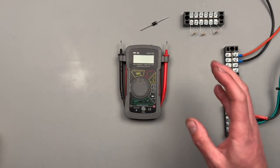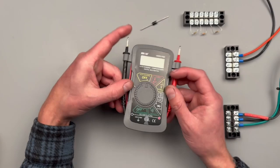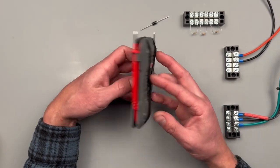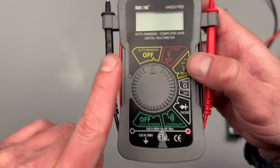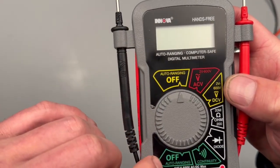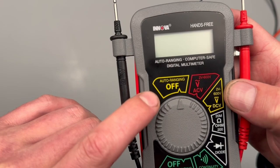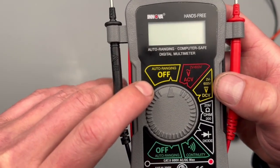On most meters, the meter leads are detachable and the reason you want that feature is because the meter leads are a wearable item and you'll want to be able to replace them as they break down. But these ones are built into the meter.